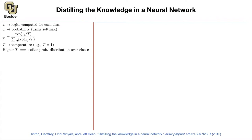What happens if T is zero? You're going to end up with one class dominating — it's going to be a Dirac delta function. Let T be very close to zero rather than exactly zero. Temperature equal to one is what we actually use in practice.